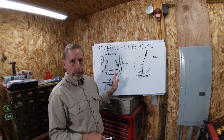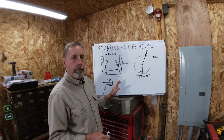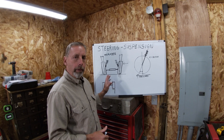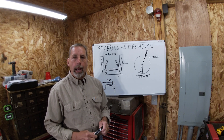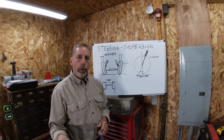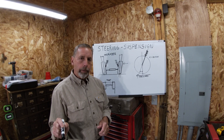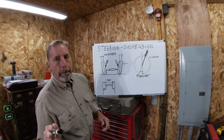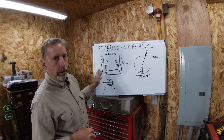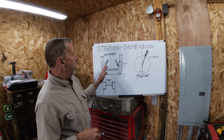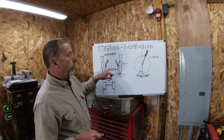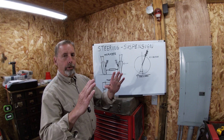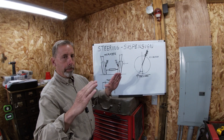I'm going to show the three basic angles we're going to deal with on a front-end alignment. I'm going to explain what these angles do, how they affect tire wear, and then we're going to move on and show you a vehicle, and I'll show you what to look for on the suspension on the front-end of a car for damage. We're going to start with a generic front-end of a unibody car. The first angle I'm going to talk about is camber — that's the amount of degree that the tires are either tipped out at the top or tipped in.